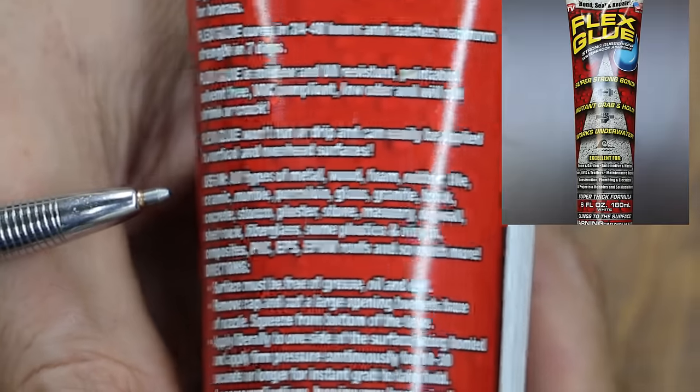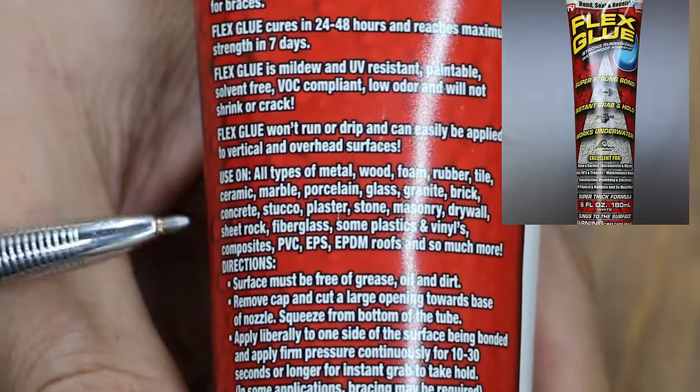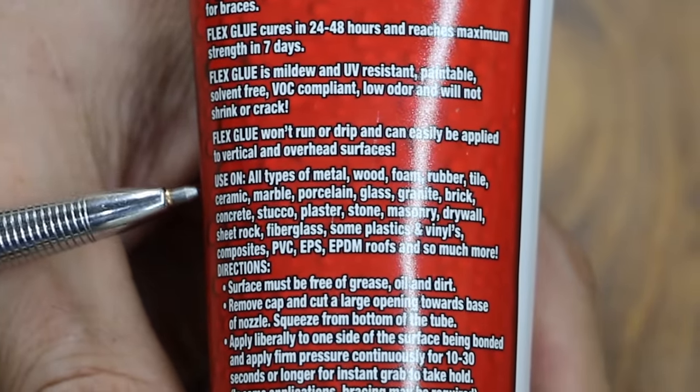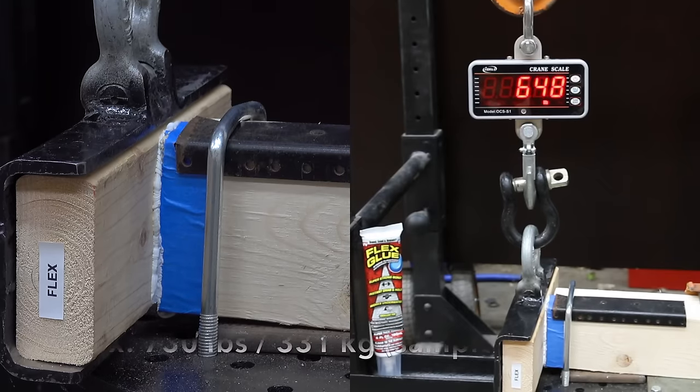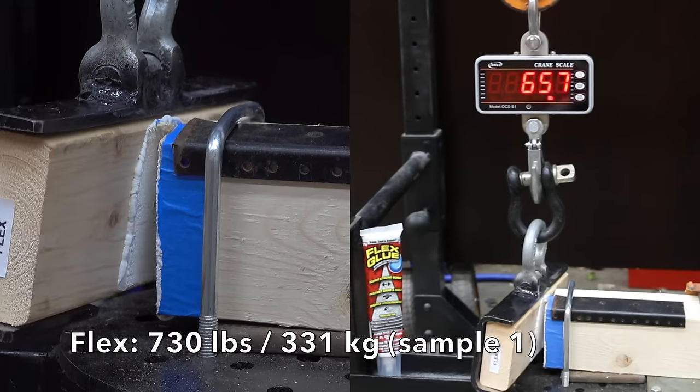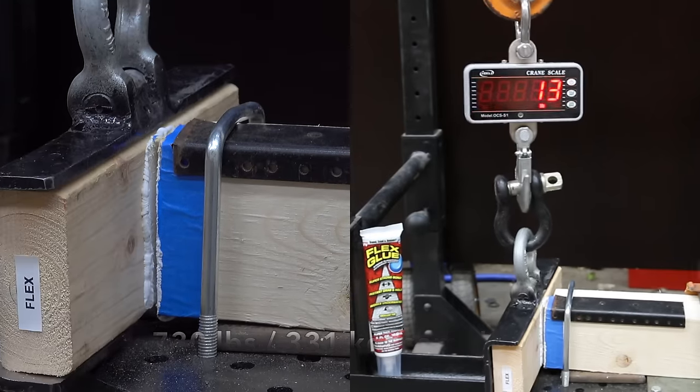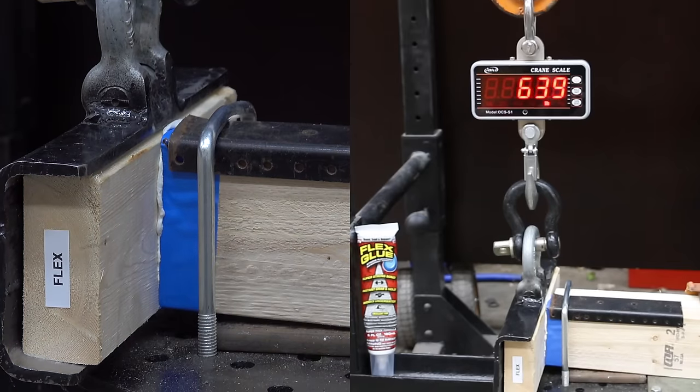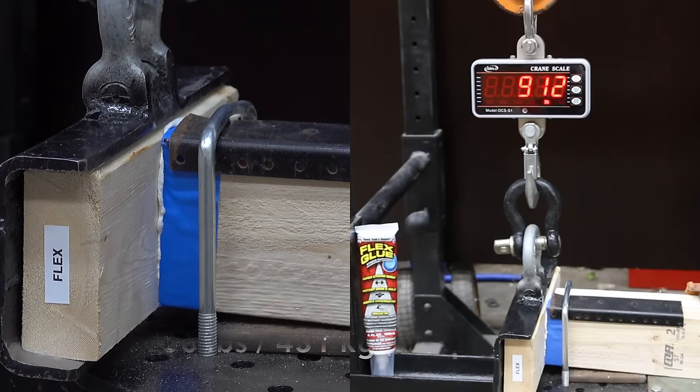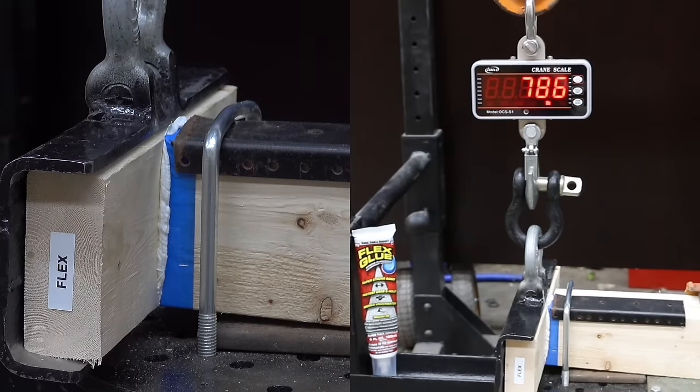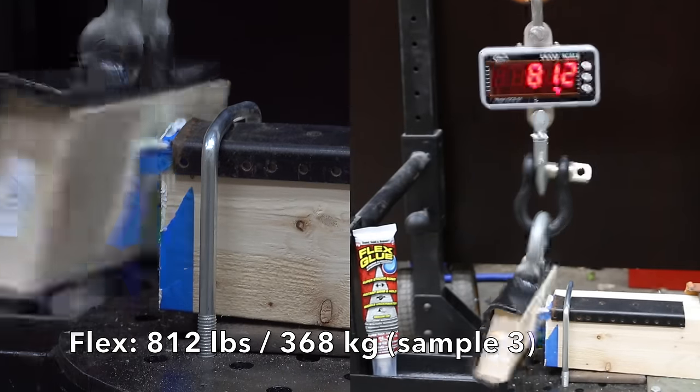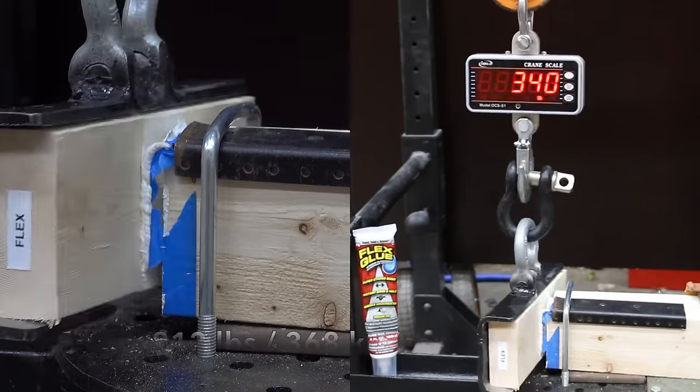Flex Glue works on all types of metal, wood, foam, rubber, tile, ceramic, marble, porcelain, glass, granite, brick, concrete, stucco, and vinyls. The first was 730 pounds. Next was a little higher at 950. The third was back down to 812.